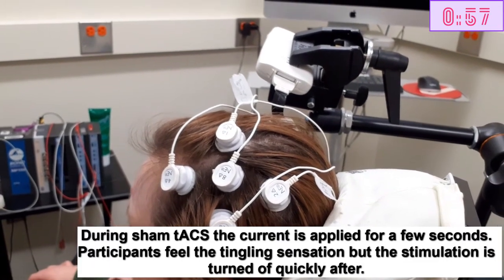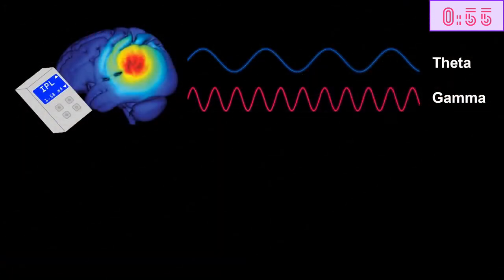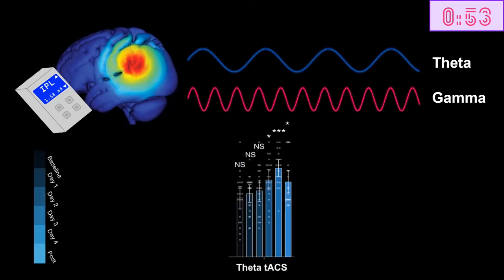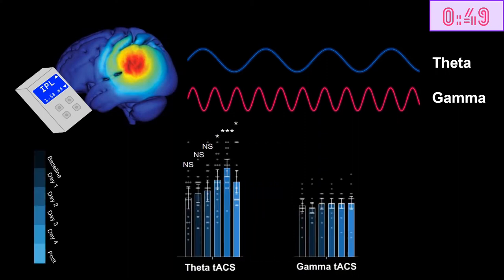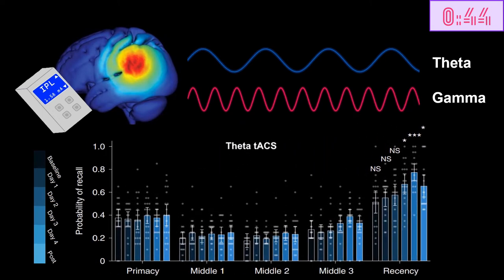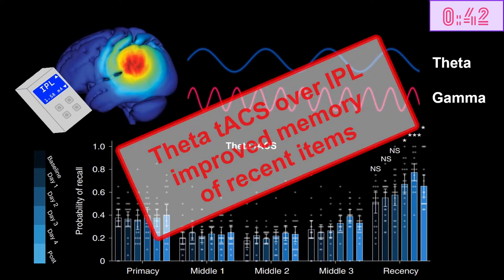So let's take a look at the results. In the inferior parietal lobule, strengthening theta waves, but not gamma waves, led to increased memory performance. And this effect was mainly observed for the last words of the sequence. So parietal lobule theta TACS increased the memory recency effect.